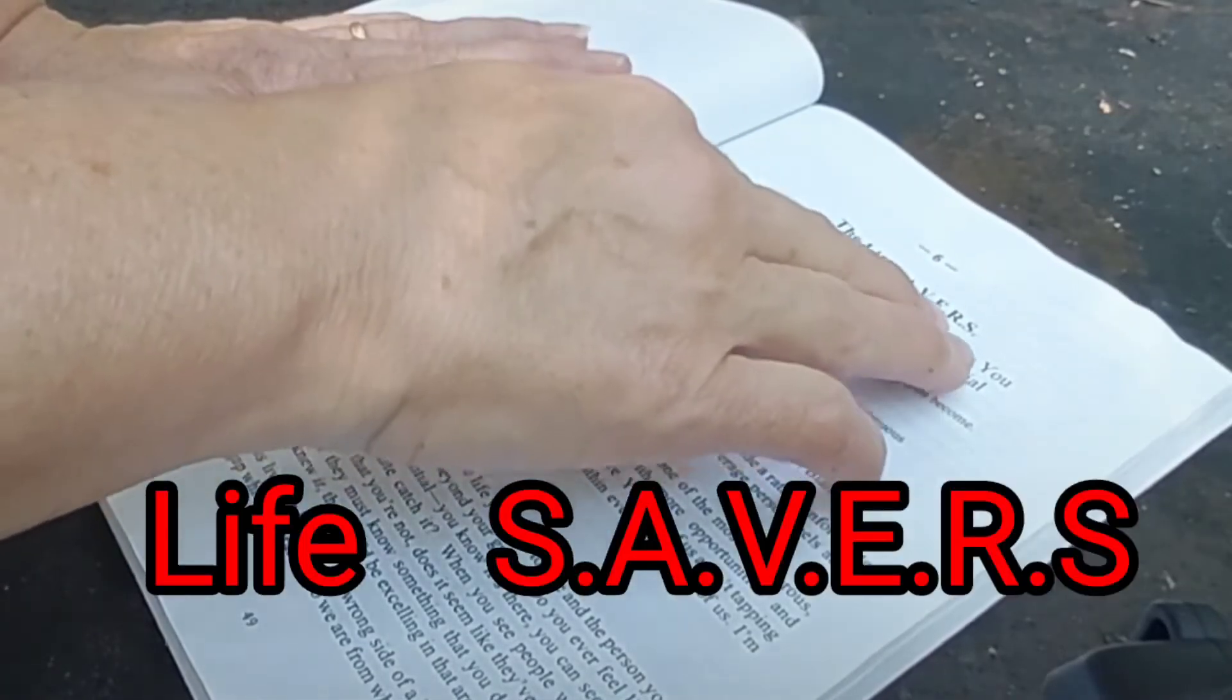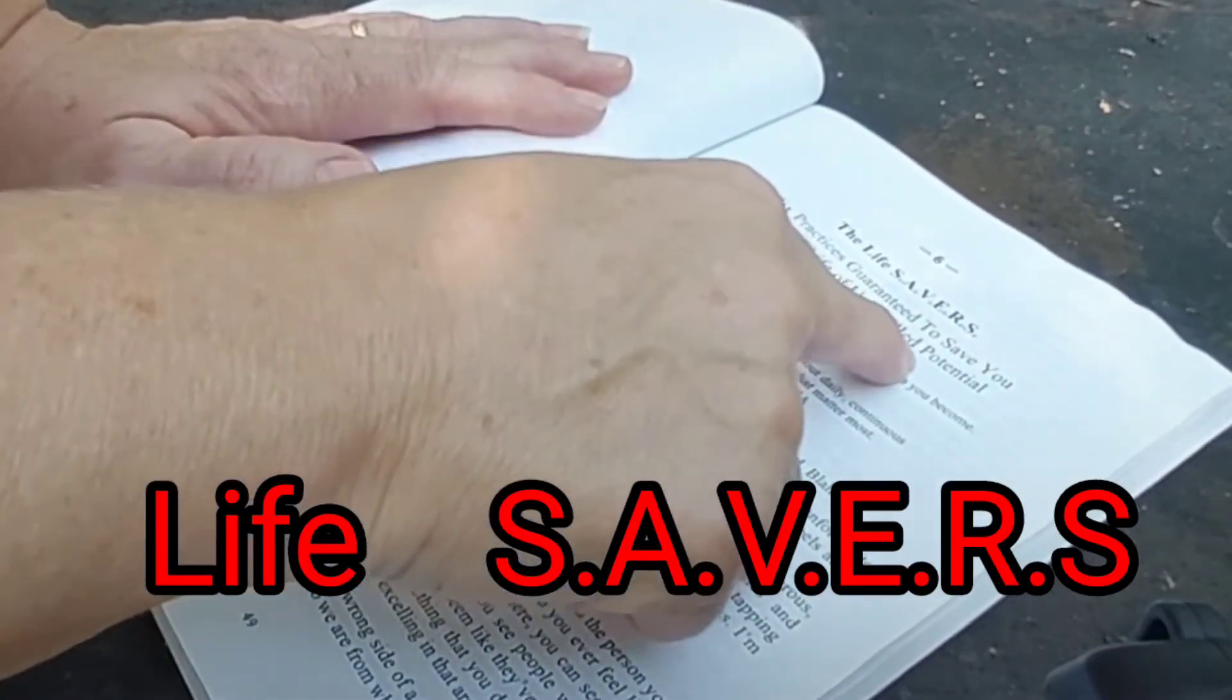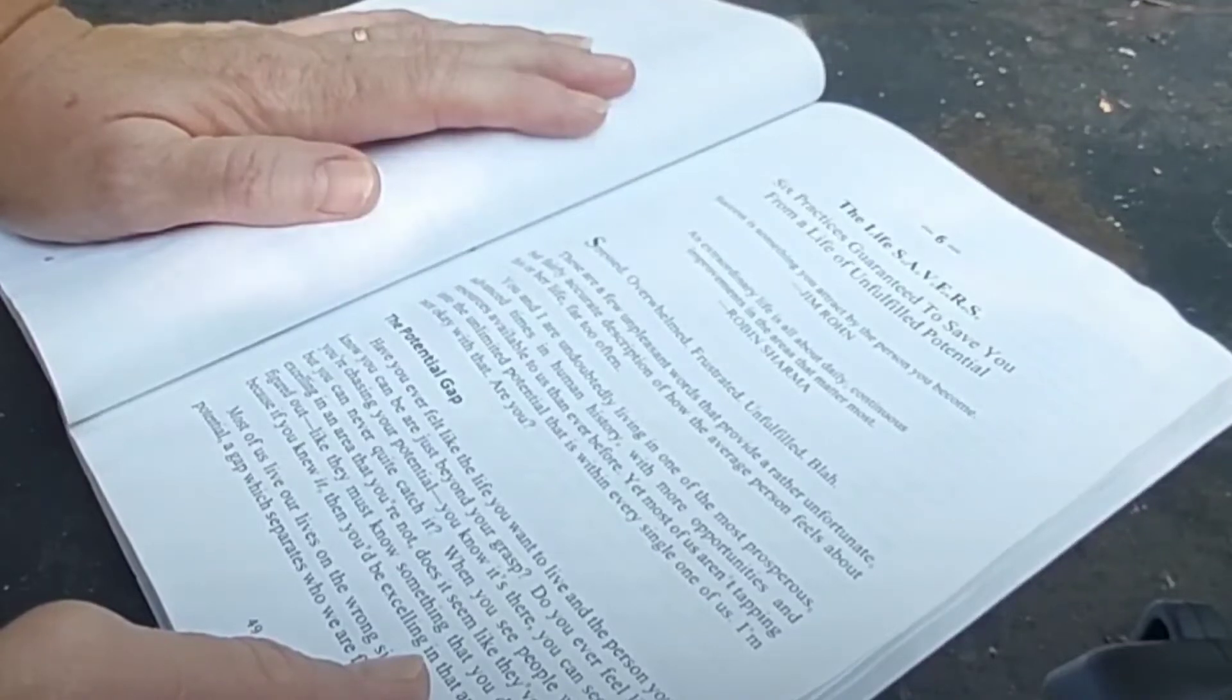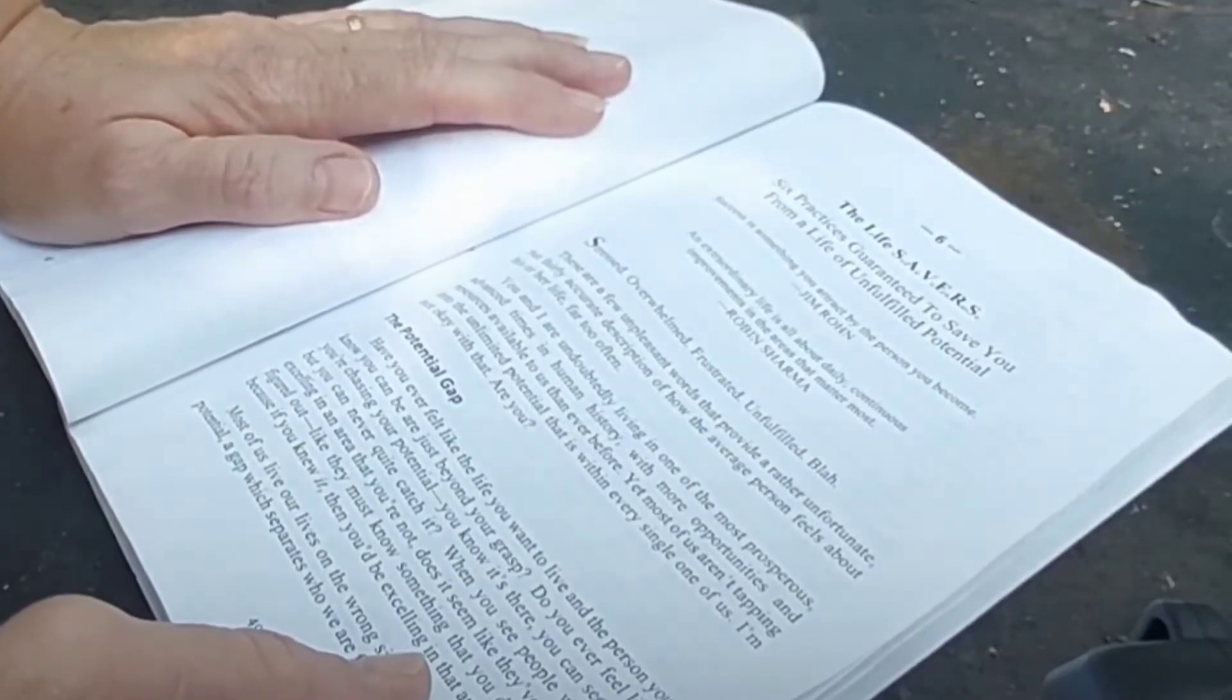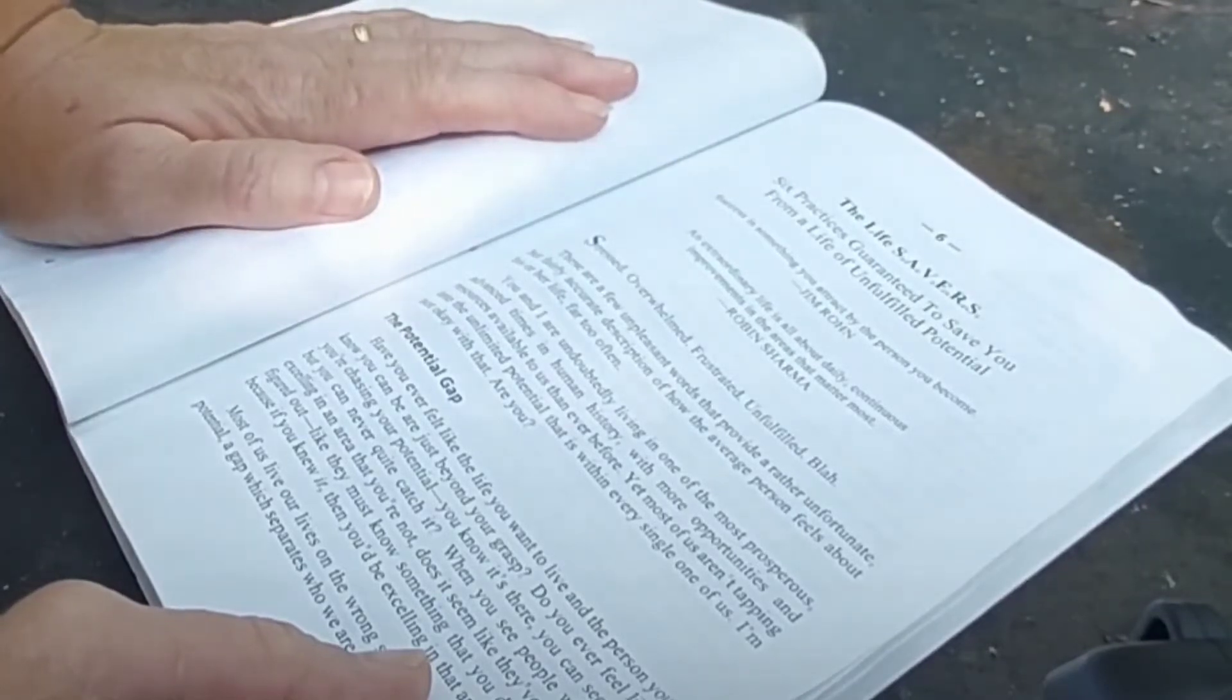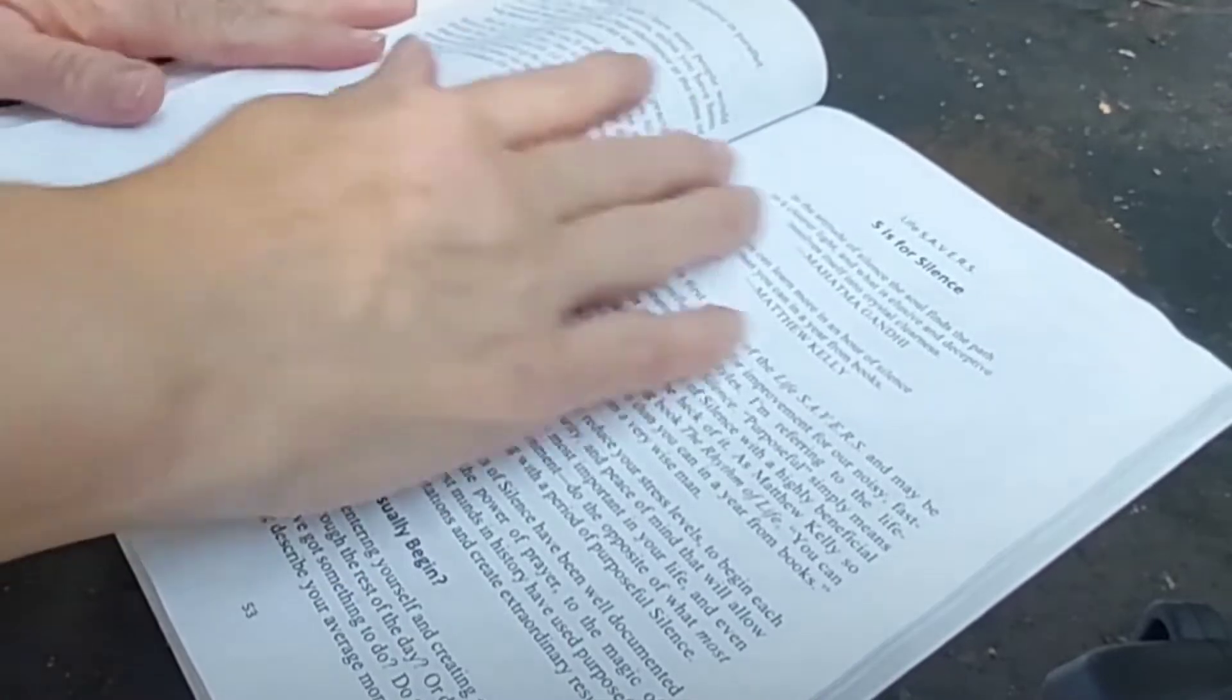Number six, the lifesavers. S-A-V-E-R-S. Six practices guaranteed to save you from a life of unfulfilled potential. Success is something you attract by the person you become. Jim Rohn. An extraordinary life is all about daily, continuous improvements in the areas that matter most. Robin Sharma. What are you doing daily for anyone or yourself that improves it? What things here in the day are you doing to improve your life? Here's the lifesavers.